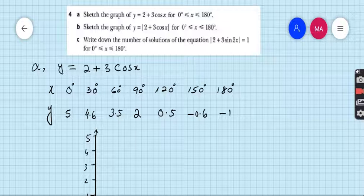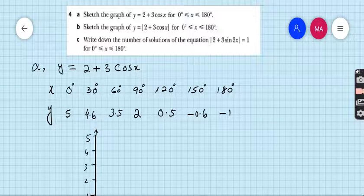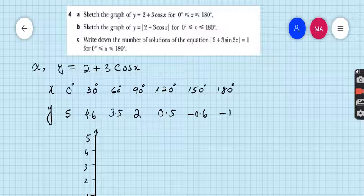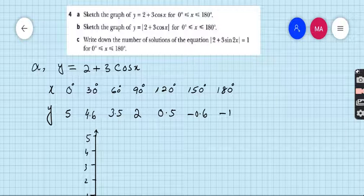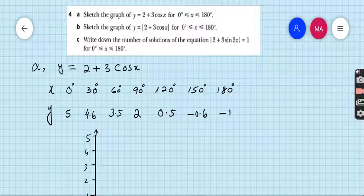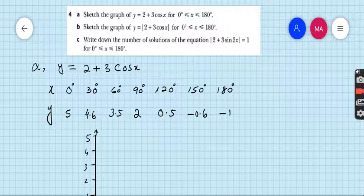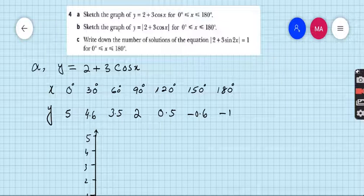Let's start question number 4 exercise 9.5. You can see on the screen, part a: sketch the graph of y equals 2 plus 3 cos x from the domain 0 to 180 degrees. For this domain we can take the interval from 30 degrees, so I have made that table of x and y values.